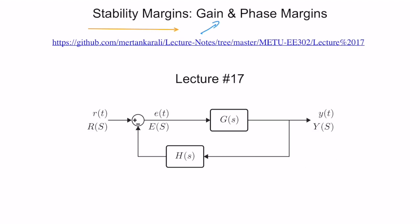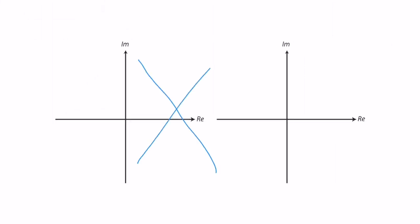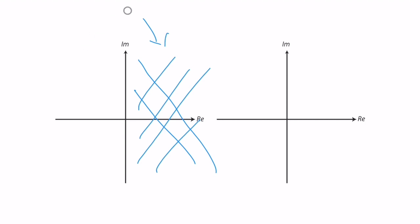Before going to Frequency Domain Analysis, let's remember how we define relative stability based on pole locations and root locus. First of all, we know that for a system to be stable, none of the closed-loop poles should be in the open right-half plane. If there is a pole on the imaginary axis, it is marginally stable. This is fine for discrete stability, but we know that systems perform better based on the pole locations.